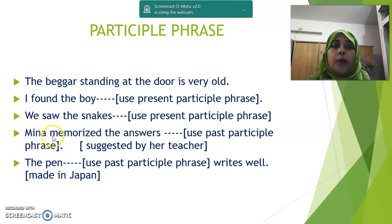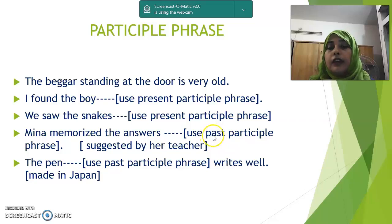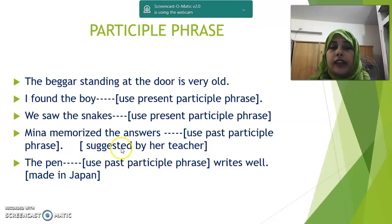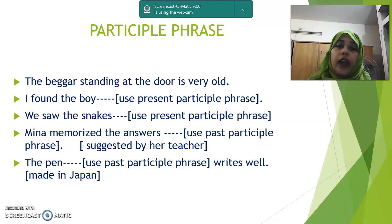Next: 'Mina memorized the answers.' Use past participle. When the past participle form of a verb functions as both an adjective and a verb, it is past participle. The answer is: 'suggested by her teacher.' Next: 'The pen writes well.' You can write: 'made in Japan,' 'made in Bangladesh,' 'made in India,' or 'made in China.' So the answer is: 'made in Japan.'